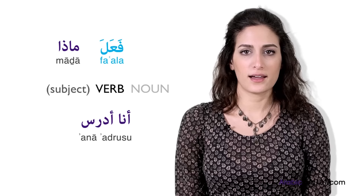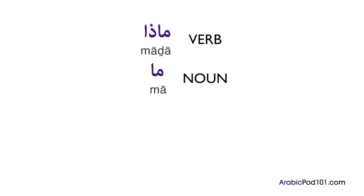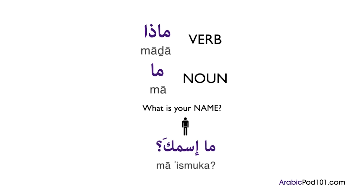The rule is simple: each time you want to ask a question starting with 'what' and followed by a verb, you have to use ماذا in Arabic. On the other hand, when used before a noun, it becomes ما — as in 'what is your name?': ما اسمك for a man, and ما اسمكِ for a woman.